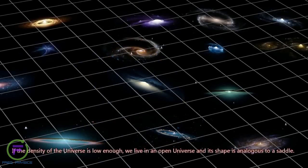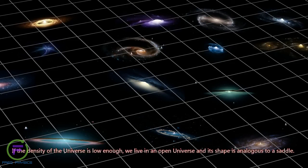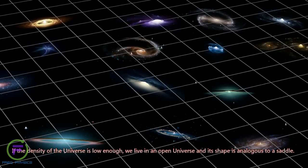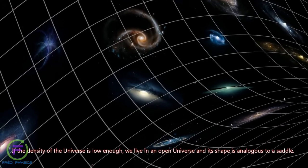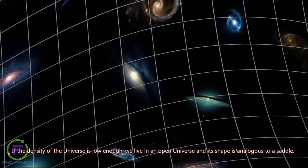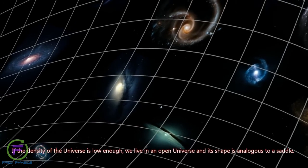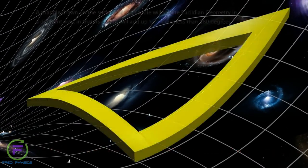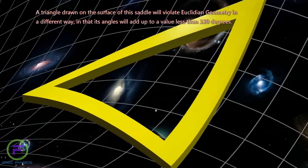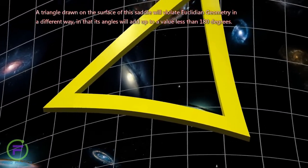If the density of the universe is low enough, we live in an open universe, and its shape is analogous to a saddle. A triangle drawn on the surface of this saddle will violate Euclidean geometry in a different way, in that its angles will add up to a value less than 180 degrees.